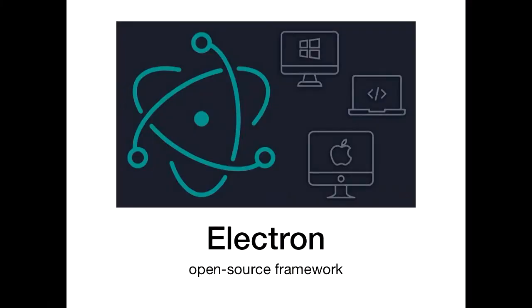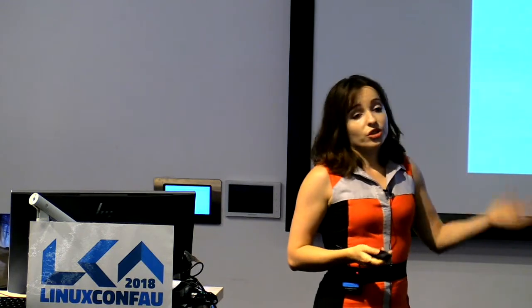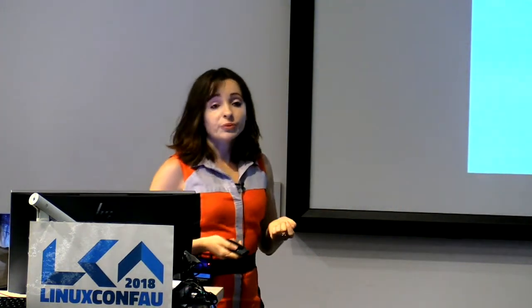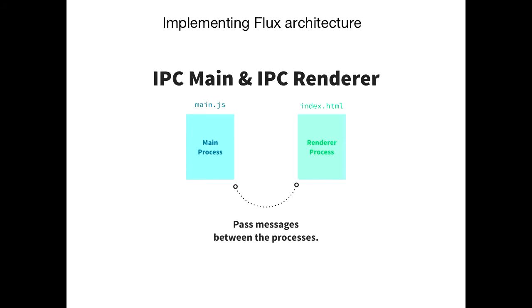Now we're getting into Electron. So what's Electron? Electron is an open source framework and generally it allows you to use your web technologies for your PC app. It's very good for web developers because you're generally doing the same stuff you do when you develop websites — you write your HTML, you style it with CSS, you add JavaScript to make it interactive, and you use Node.js on the backend.